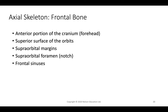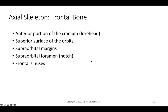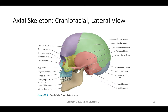The frontal bone forms the forehead, has supraorbital margins and a supraorbital foramen, and forms the superior surface of the eye orbits, as well as containing the frontal sinuses. The coronal suture connects the frontal to the parietal bone; the sagittal suture runs between the two parietal bones; the squamous suture connects the parietal to the temporal bone; and the lambdoid suture connects the occipital to the parietal bones.